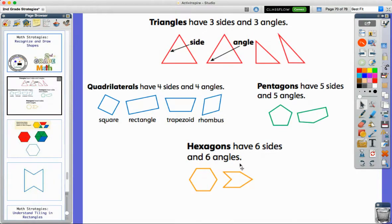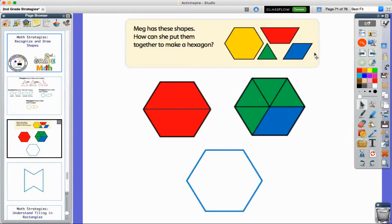Part of the lesson is reviewing what you know, learning new terminology for some shapes, and talking about sides and angles. We also look at how to put shapes together to create other shapes. This will come in handy as you go on to second and third grade. In this example from Ready Math, it says May has these shapes - how can she put them together to make a hexagon?